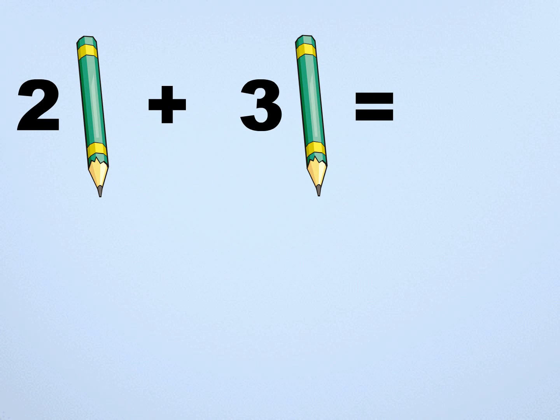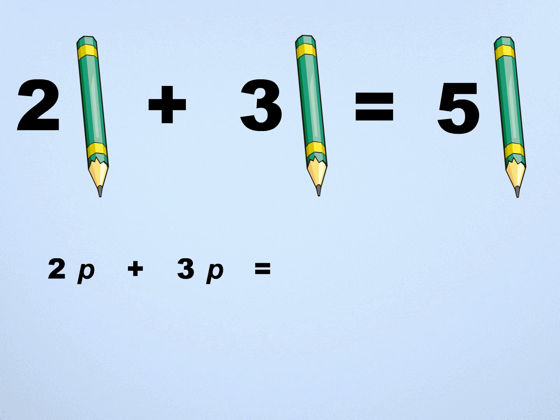Look at the figure shown. How many are 2 pencils plus 3 pencils? 5 pencils. Similarly, when we add 2P and 3P, we get 5P. And if we subtract 4P from 5P, we will get 1P, which is written as just P.